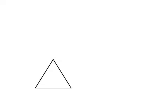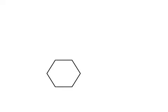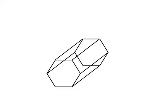Here's a triangle; here's a parallel triangle — we connect the corners, and now we have a triangular prism. And we can do the same thing with a hexagon: a second hexagon, connect the corners, and we have a hexagonal prism.